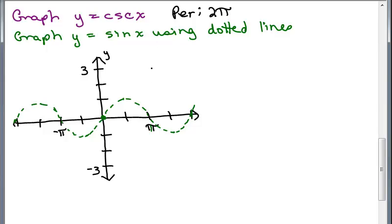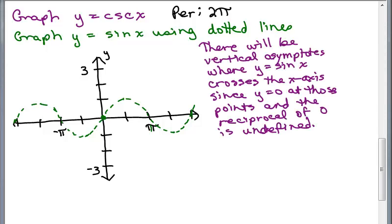So any time the sine function crosses the x-axis, that means y is 0, and you're not going to be able to take the reciprocal. There will be vertical asymptotes at those places. So anytime we have a point where the sine x crosses, we're going to make a vertical line through those points. It means that the cosecant will not have any y-value there because it's undefined.